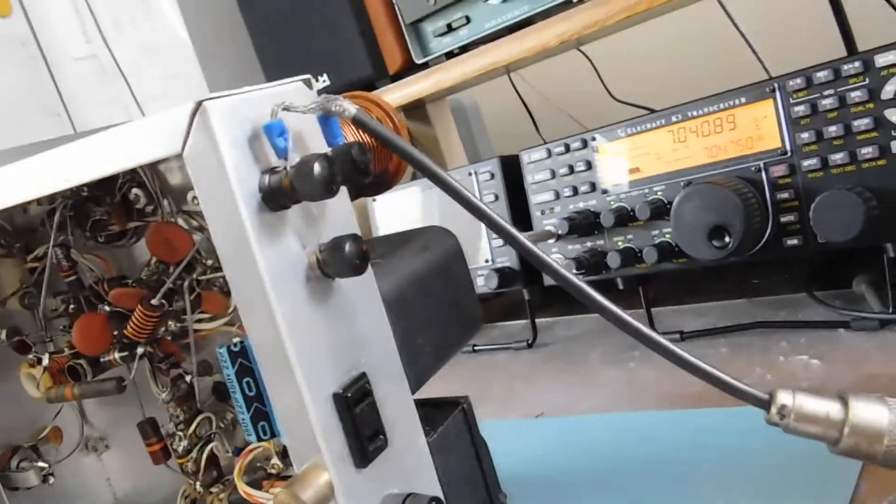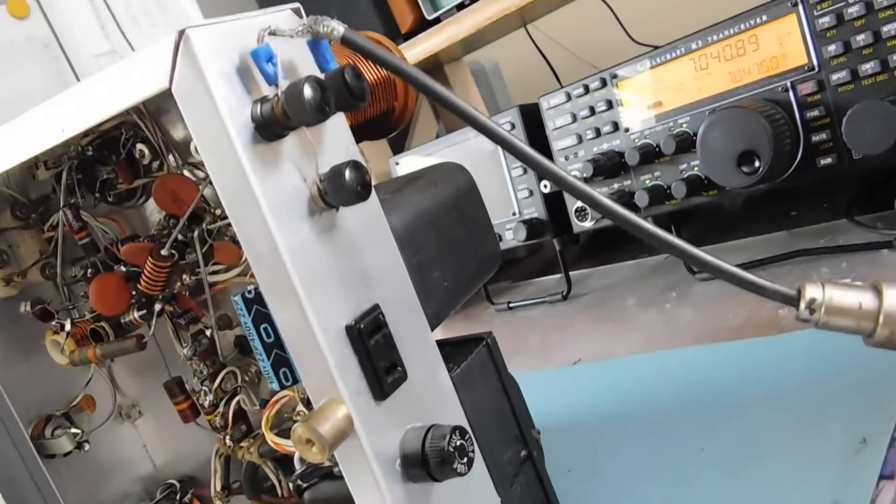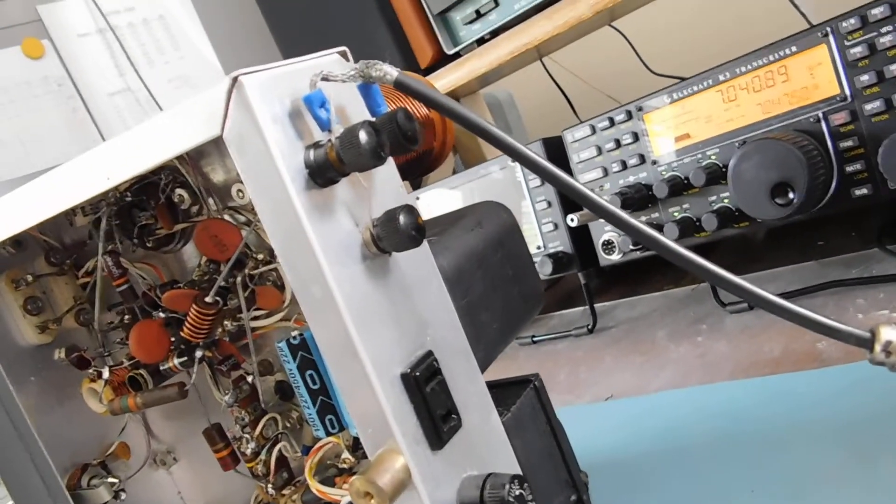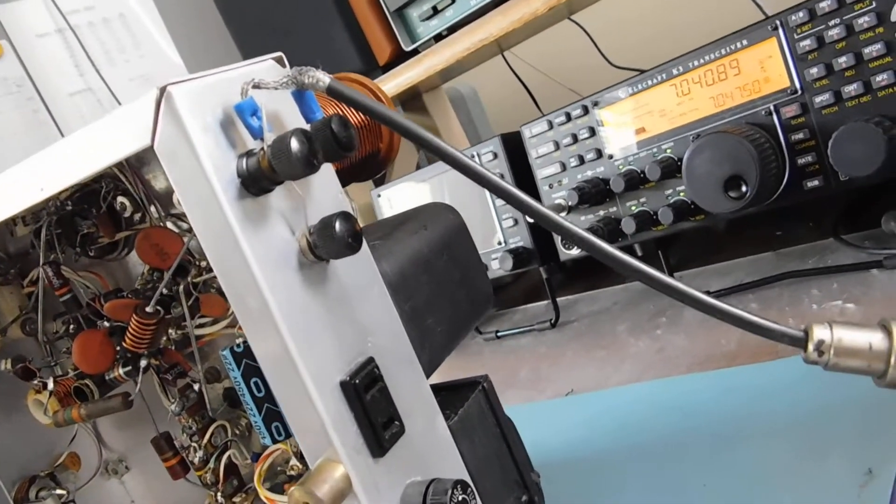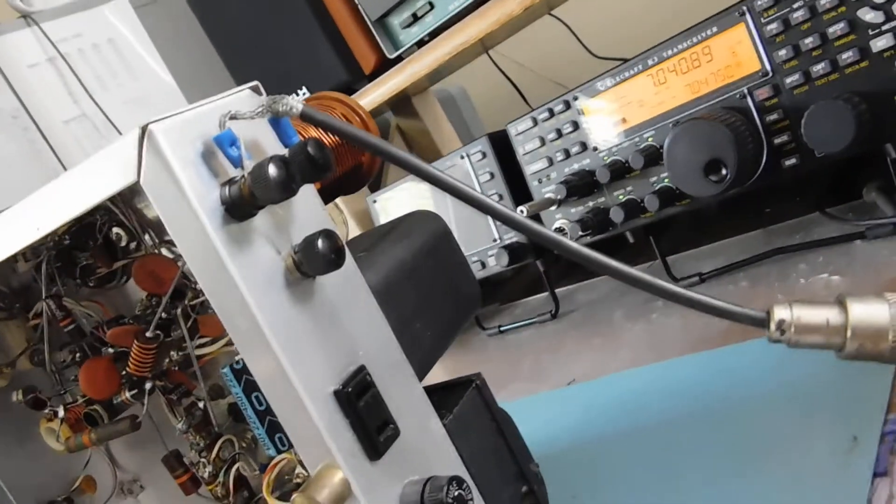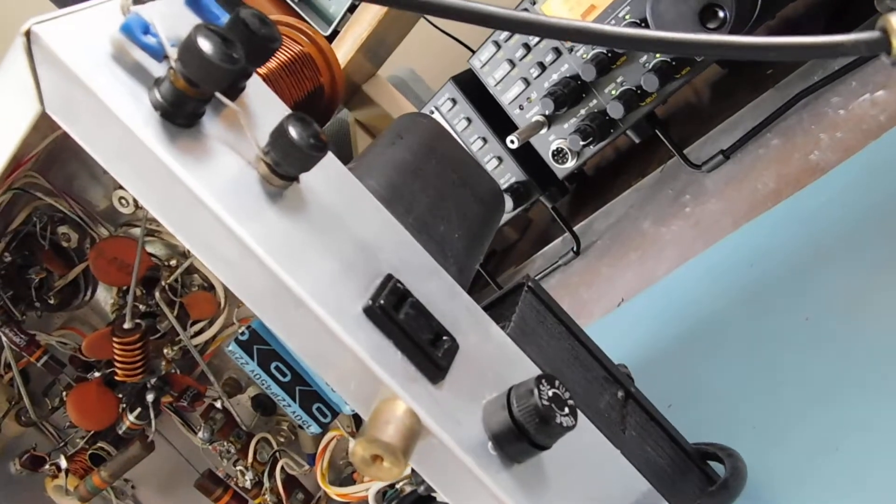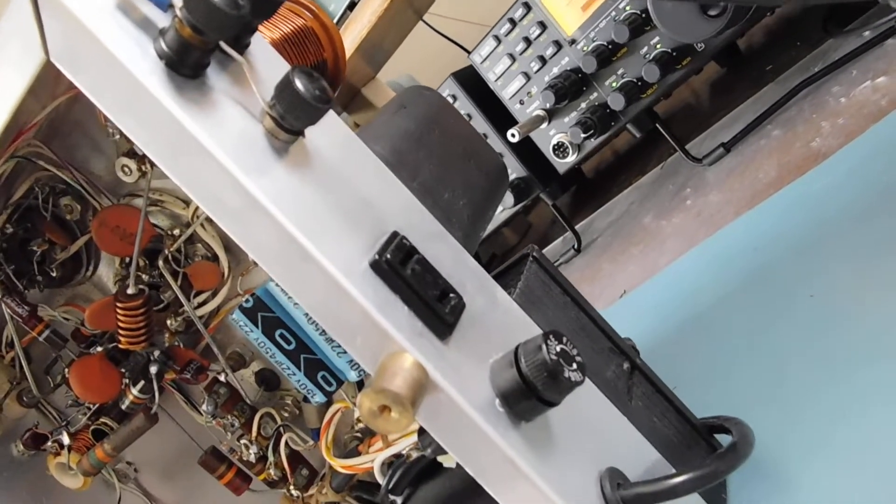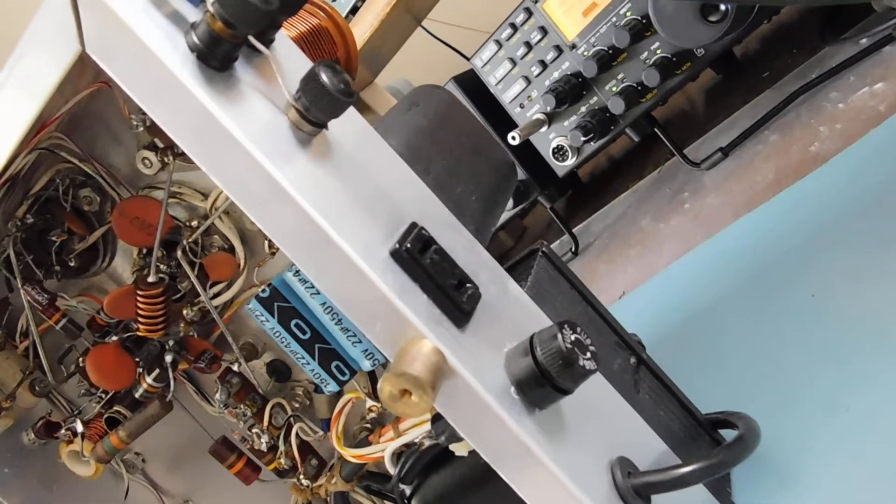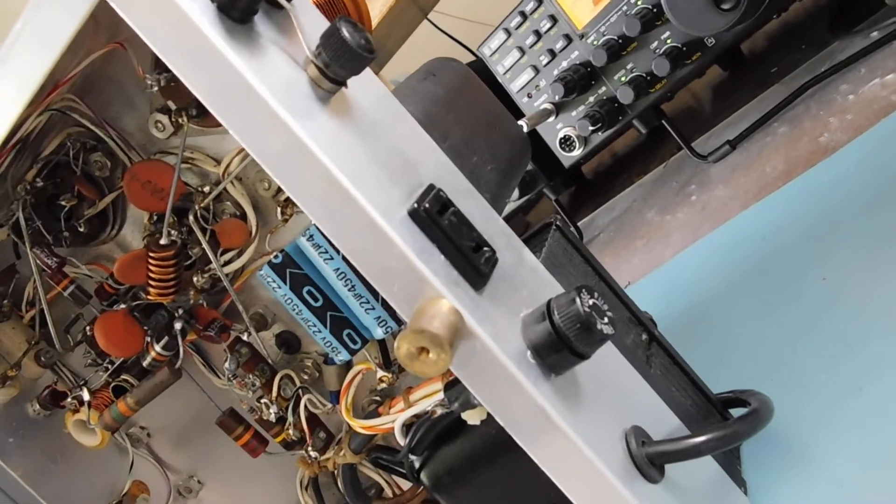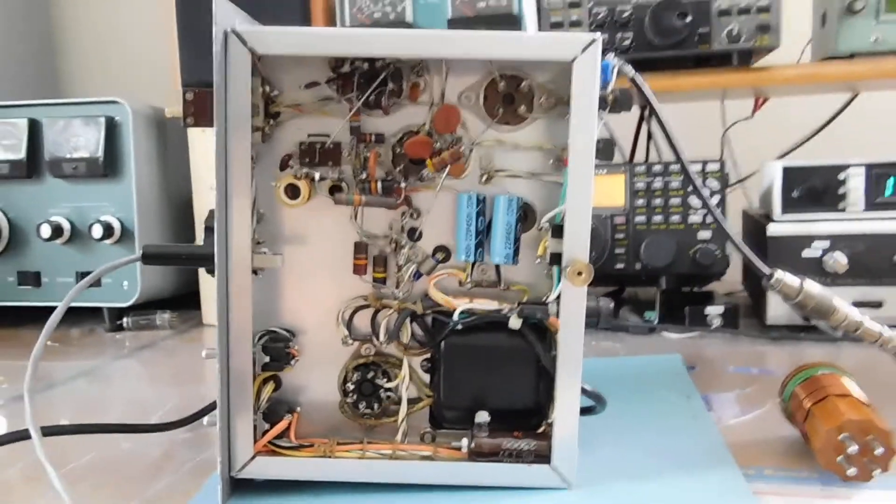And in the back there's the output. I've got it set up into a dummy load, although you can use open wire feeders. And there's a little switched 120 volt AC jack back there that when you go into transmit you got power for a dow key relay. So all in all very very well done.